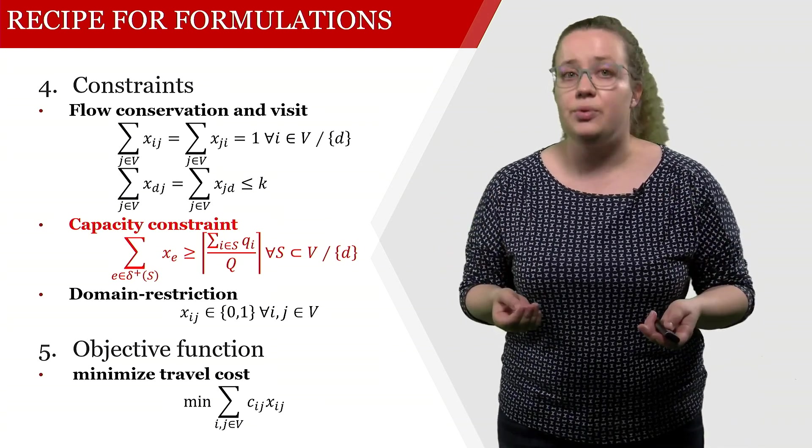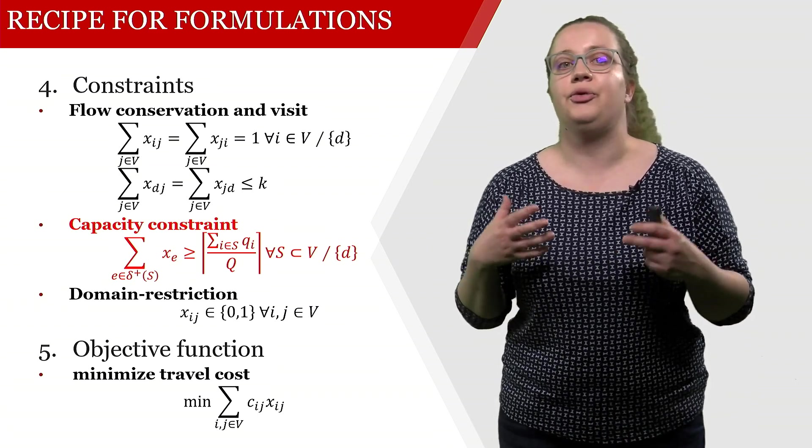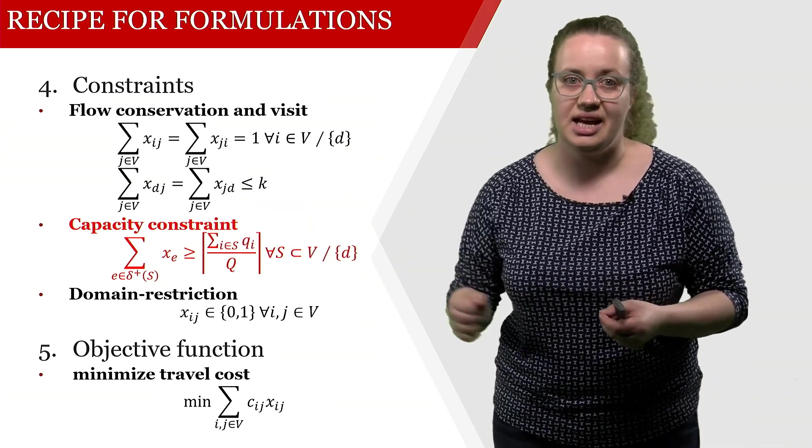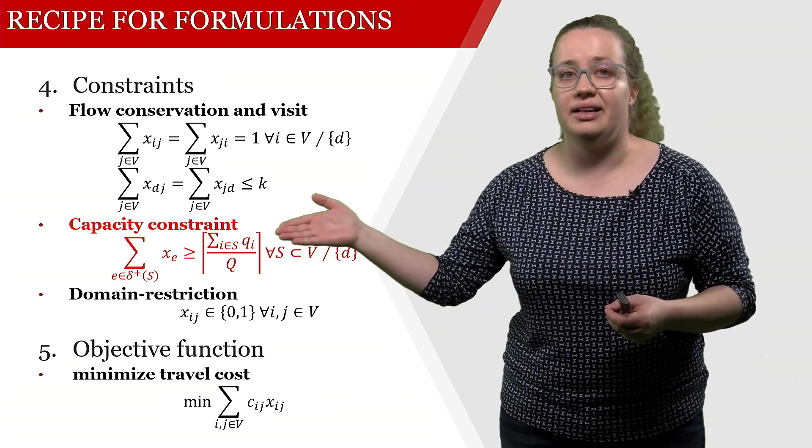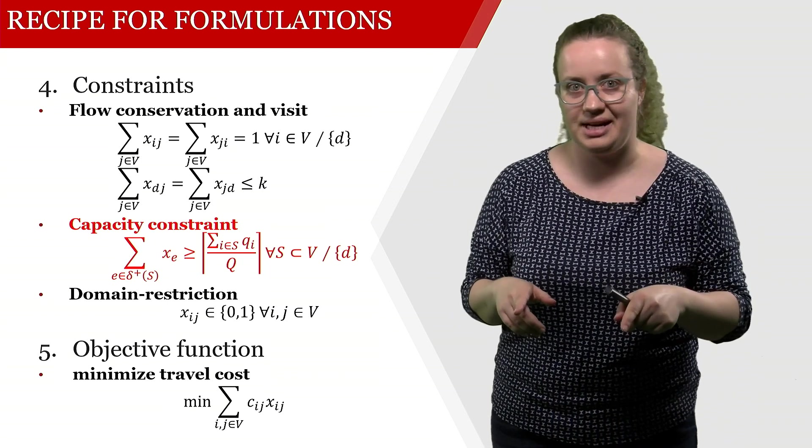Now we're actually going to look into how this constraint works. What we're saying here is that the number of arcs that leave a subset S has to be at least the demand in this subset divided by the capacity.